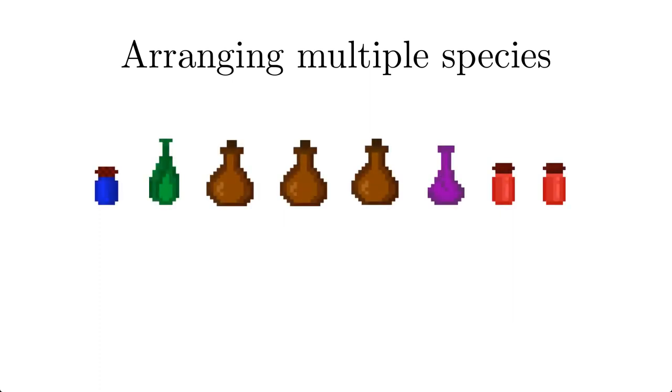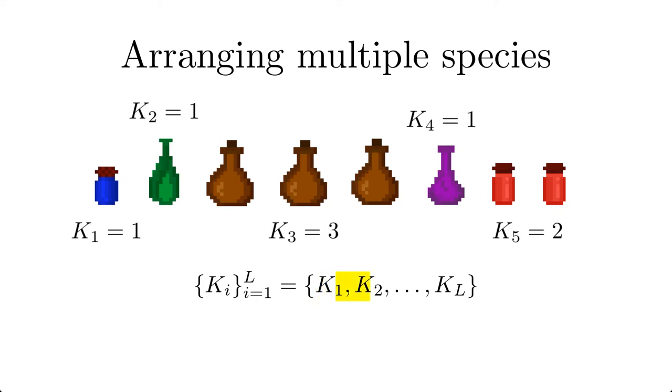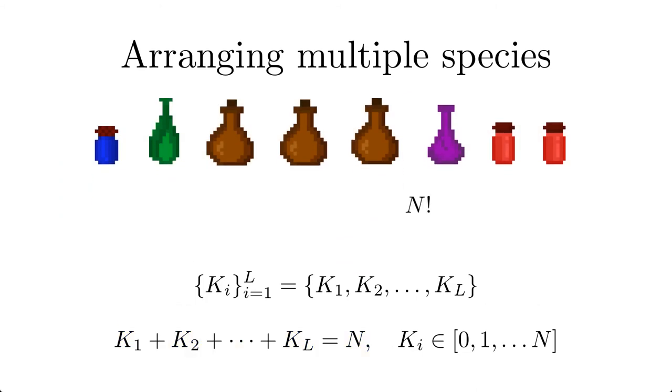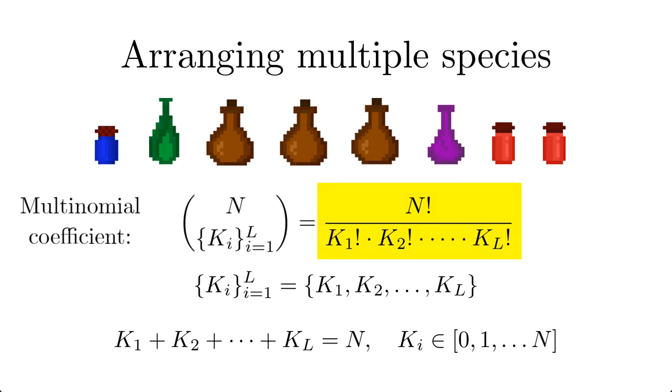The question of arranging objects that can be divided into subsets according to their color can easily be generalized to more than two colors. We assume k1, k2 and so on elements in the subsets with a total of n elements. Then n factorial is the total number of permutations and k sub i factorial the number of permutations for the elements of subset i. So the number of combinations or arrangements is given by the following term which is called multinomial coefficient.